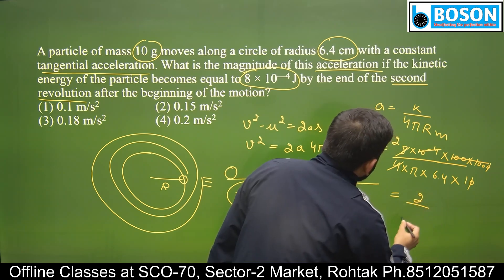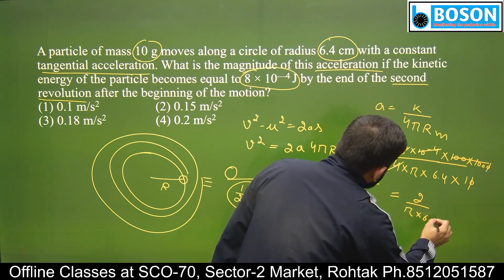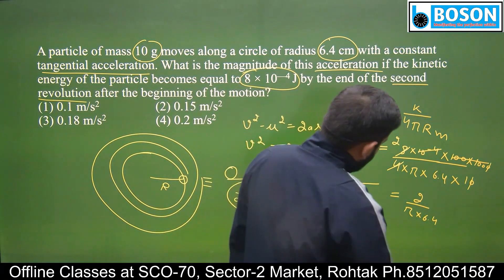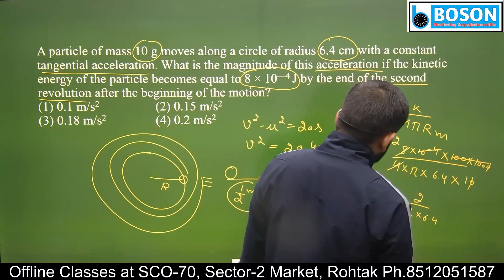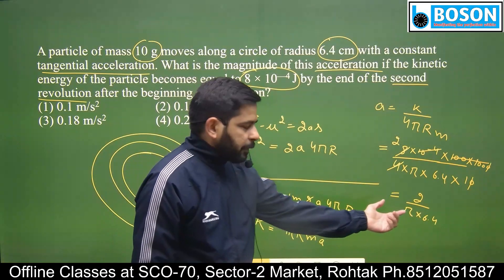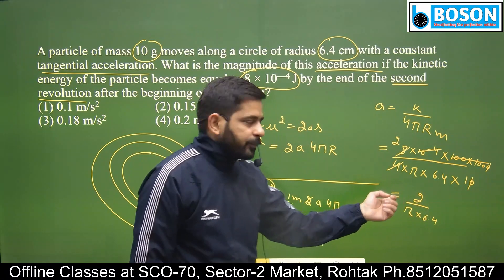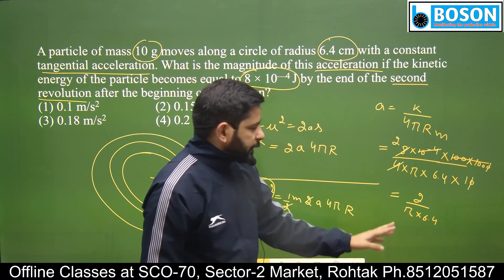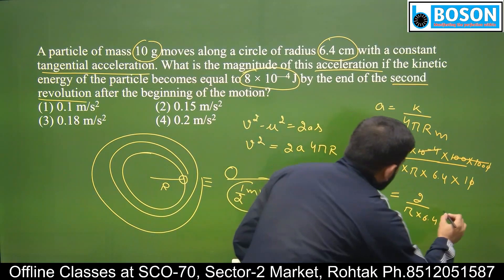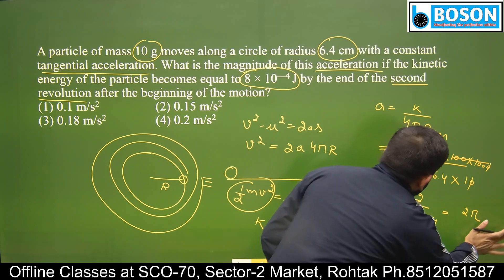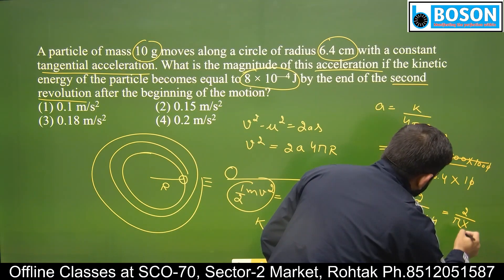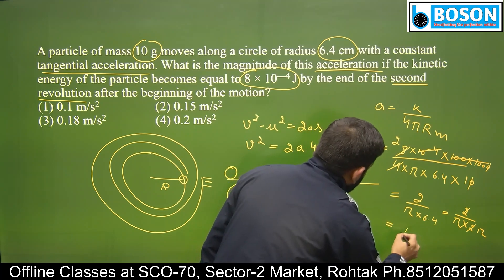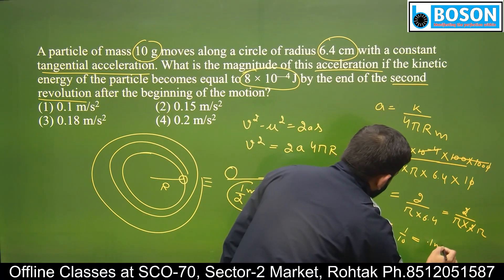Answer आपका meter per second square में है। It will be 2 by π into 6.4. Calculation थोड़ी difficult हो सकती है — 3.14, it will be 10.2 के आसपास अंसर आएगा। मुझे हलका सा idea यह है: π² की value 10 के आसपास होती है, और 6.4 है जो 2π के आसपास है। 2 upon π × 2π — 2 से 2 कट गया — π² = 1 by π² ≈ 1 by 10 = 0.1 meter per second square।